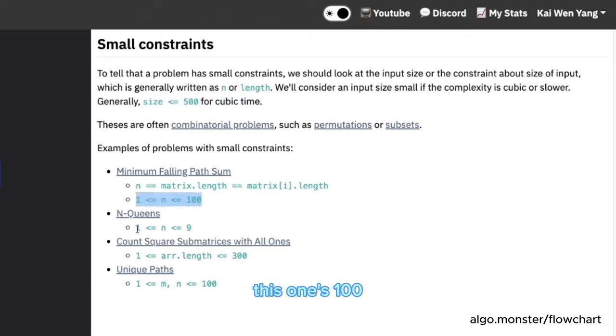And typically we would say a variable with constraints less than or equal to 500 will be small. For example, here, this one's 100. This one's really small. It's only up to nine. This one's up to 300. And here's 100. If you look at this constraint here and you can see that it's less than or equal to 500, you put this in the small constraints or bounds category.